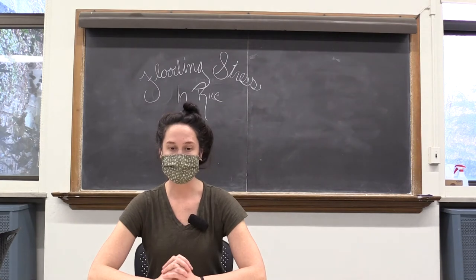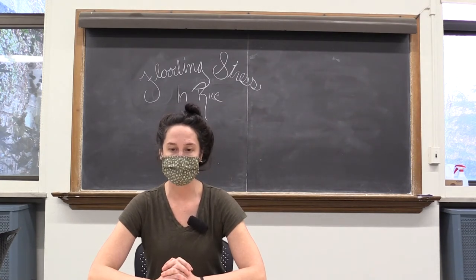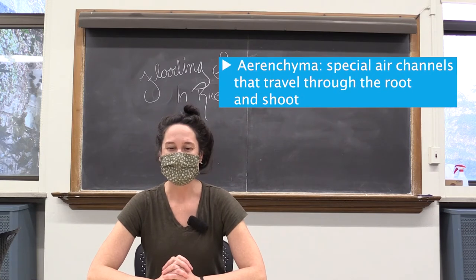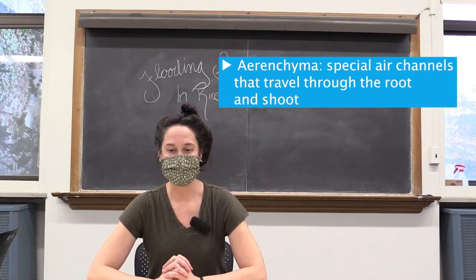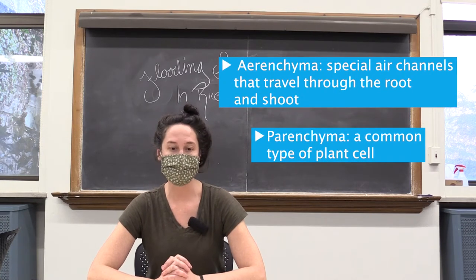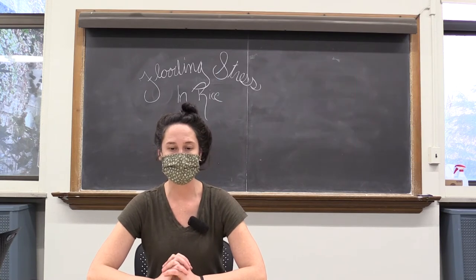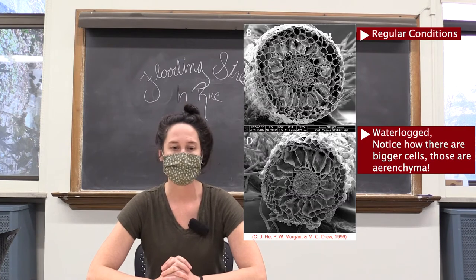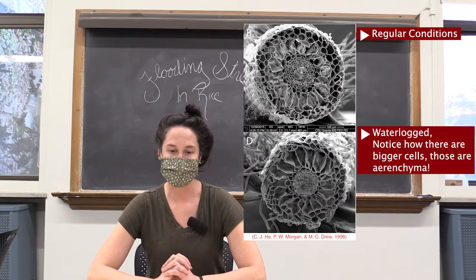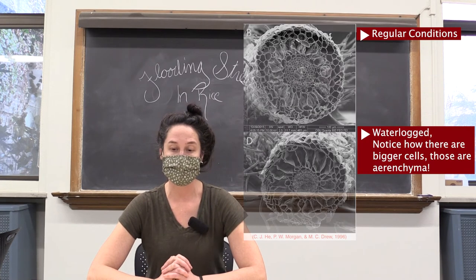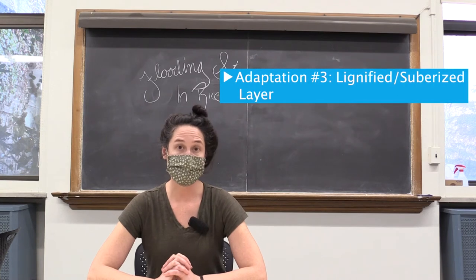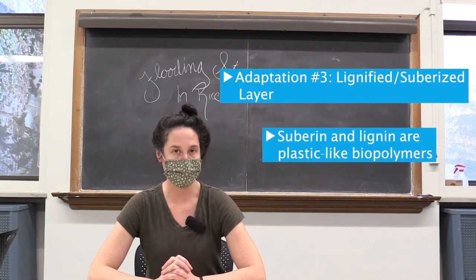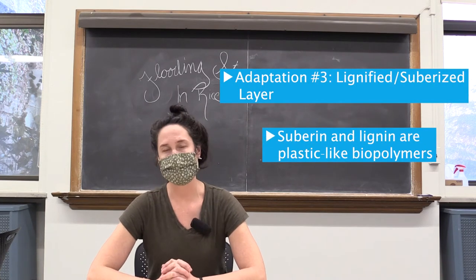One amazing feature of rice and other flood-tolerant plants is that it has something called aerenchyma in the roots. These are special channels in the parenchyma layer that travel through the root and all the way up the shoot. This lets air travel from the top of the plant all the way to the bottom, like a snorkel. In order to prevent this air from being lost out the sides of the plant, there is a waterproof barrier made of lignin and suberin on the outside of the root.